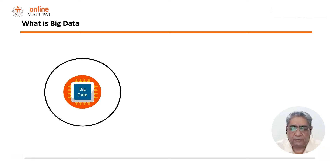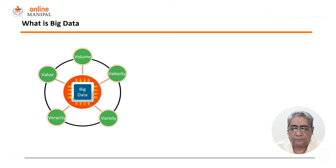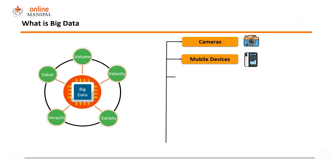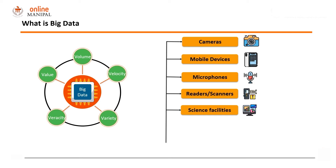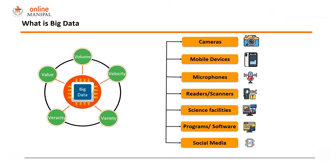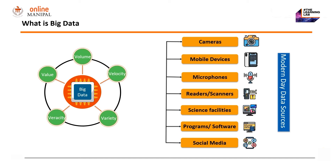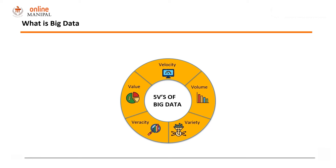So what is big data? Big data has a bunch of Vs attached to it: volume, velocity, variety, veracity, and value. A subsequent slide will look into what each of these represent. Some of the modern day data sources that contribute to big data generation include cameras, mobile devices, microphones, readers, scanners, scientific facilities, programs, software, as well as social media. All these and many more sources provide what we know today as big data.